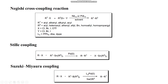The last example is the Suzuki-Miyaura coupling, which is also a palladium-catalyzed cross-coupling reaction of organoboron compounds with organic halides or triflates, also in the presence of a base, to form this type of product.